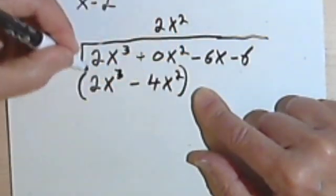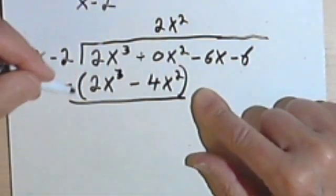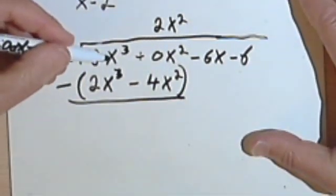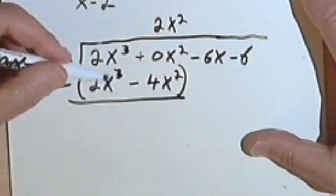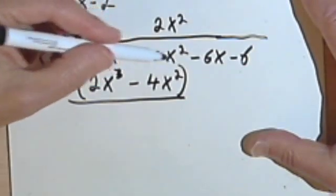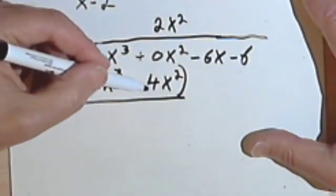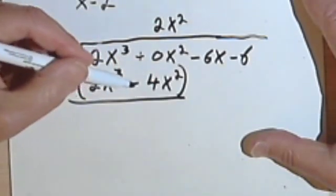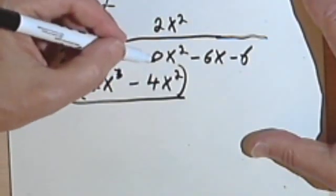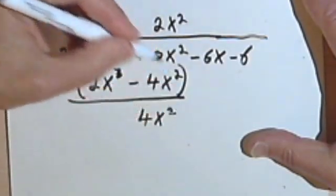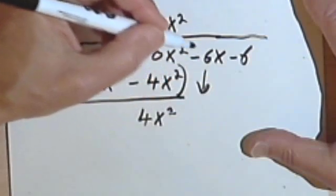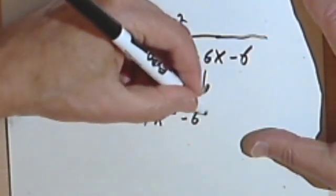I'm subtracting. So subtracting the 2x to the third minus 2x to the third, these cancel. I've got 0x squared minus negative 4x, minus negative is the same as positive. So I've got 0 plus 4. This will be 4x squared. Bring down my next term, negative 6x.